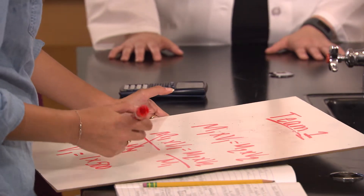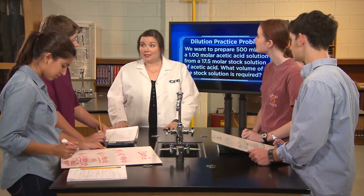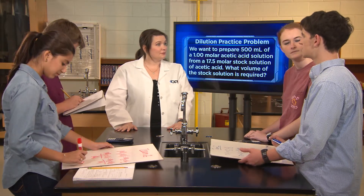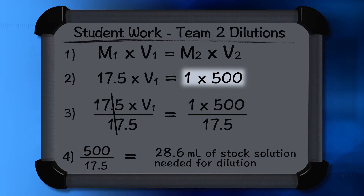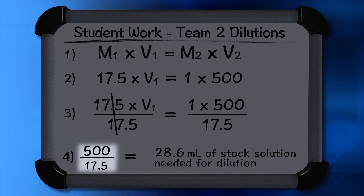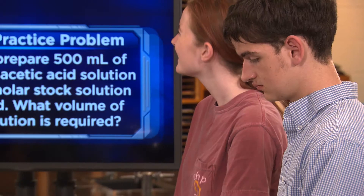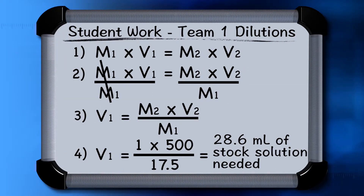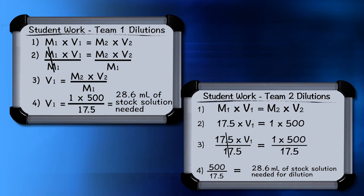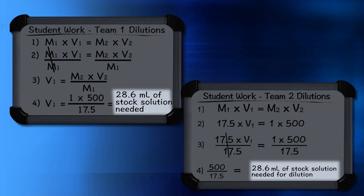Is that all we have to do? Yes — for this problem, that's all you would need to do, since it's only asking for the volume of the stock solution required. Did you get the same thing? We did, but we didn't rearrange the equation like they did. We just plugged in 1.0 molar and 500 milliliters on the right-hand side, and used 17.5 M1 times V1 on the left-hand side, then divided 17.5 molar into 500 milliliters. It's basically the same thing — Team 1 did some algebra first to get the unknown variable by itself; you guys plugged in first. Either way, it's correct. Both groups found that you'd need 28.6 milliliters of stock solution.